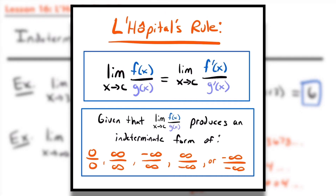L'Hôpital's Rule states: the limit as x approaches some value c of f(x) divided by g(x) equals the limit as x approaches c of f′(x) divided by g′(x). This allows us to rewrite the limit in a simpler form by taking the derivative of the numerator and denominator separately. However, L'Hôpital's Rule only applies when the original limit produces an indeterminate form: 0/0, ∞/∞, −∞/∞, ∞/(−∞), or −∞/(−∞). If your limit is not in one of these five forms, you cannot use L'Hôpital's Rule.